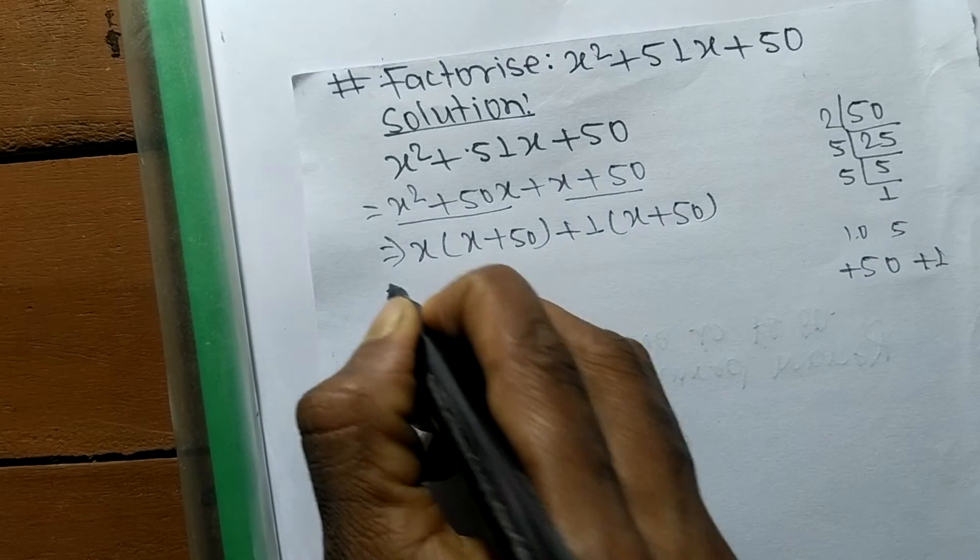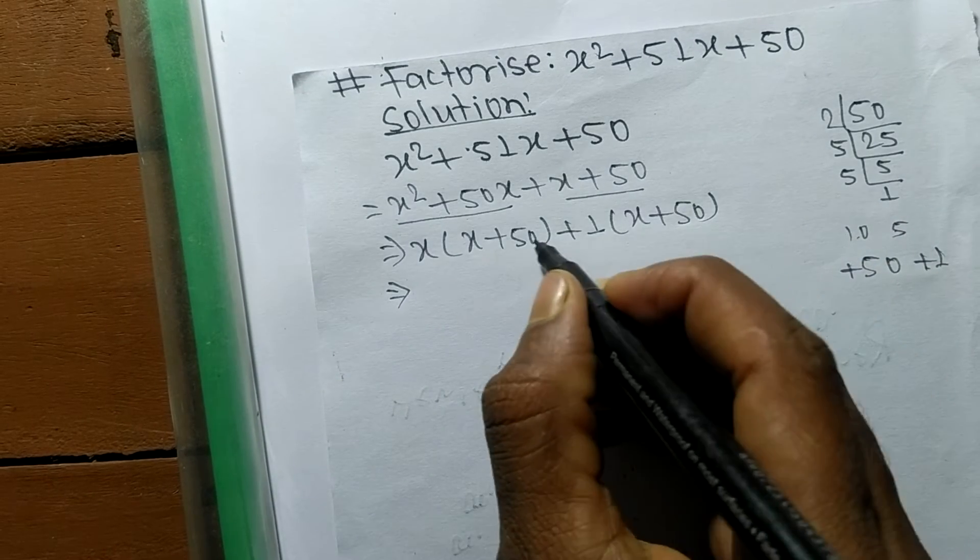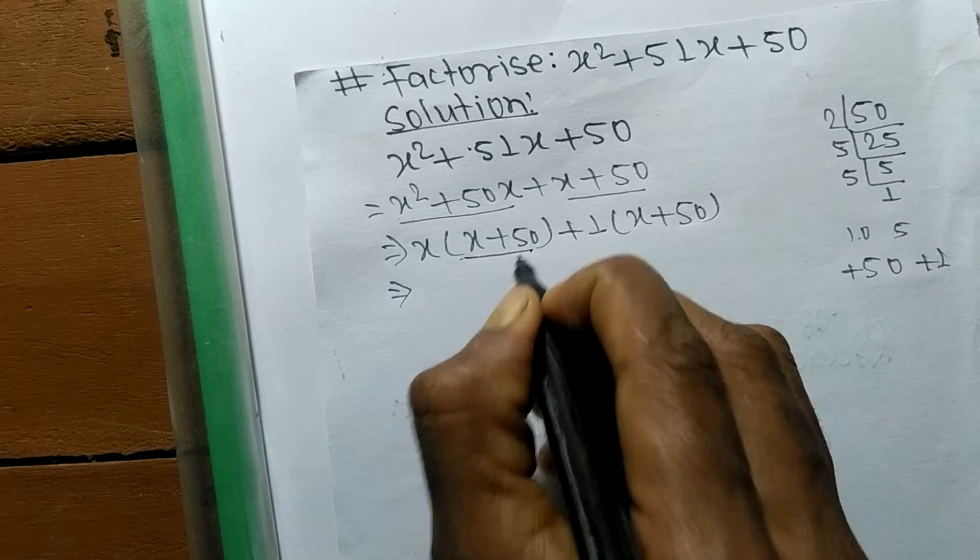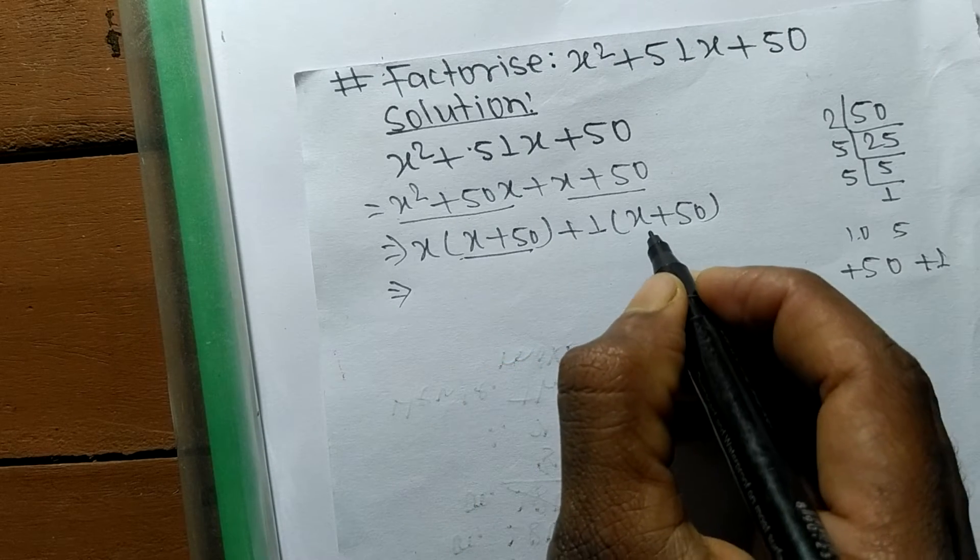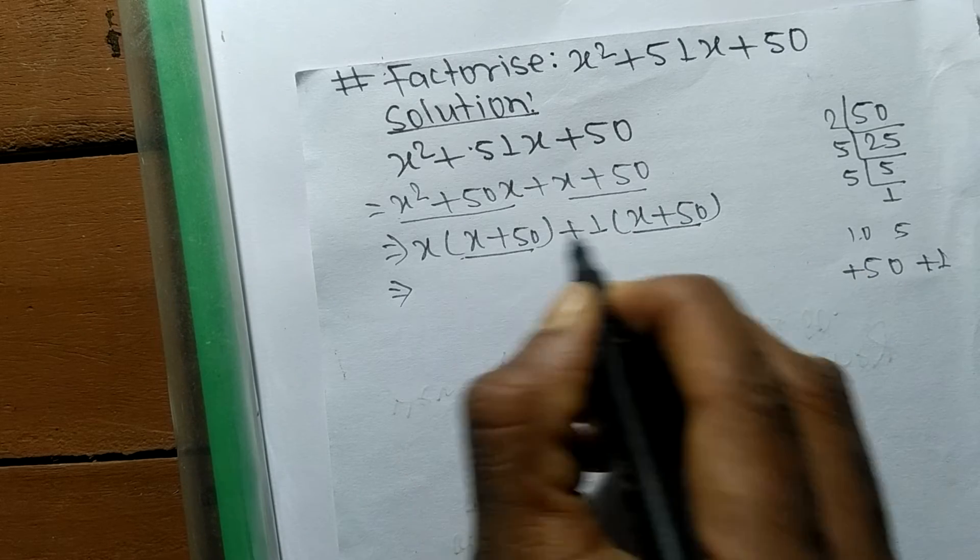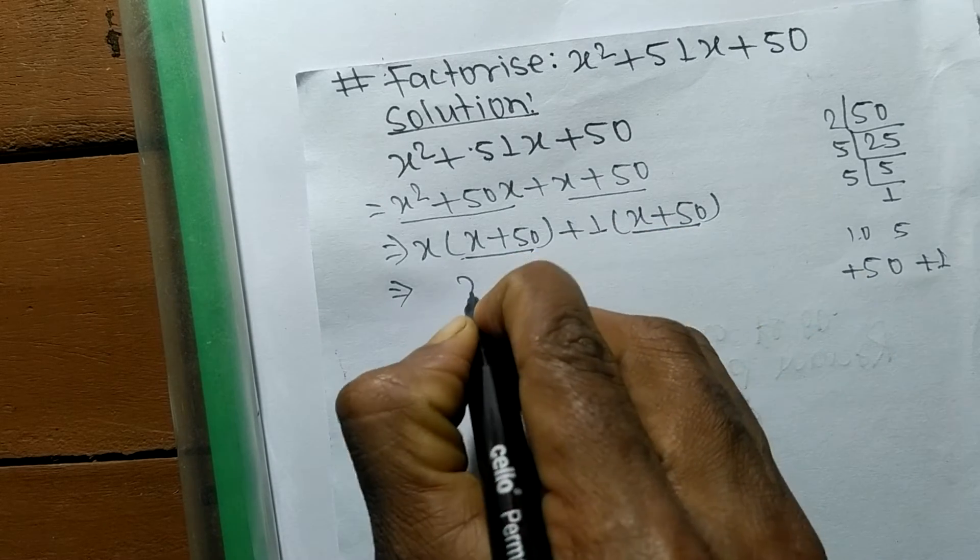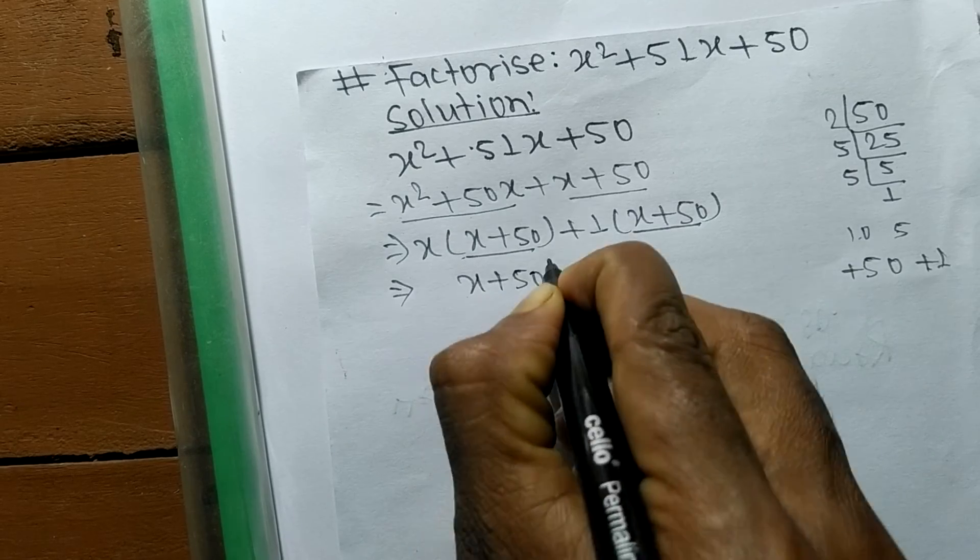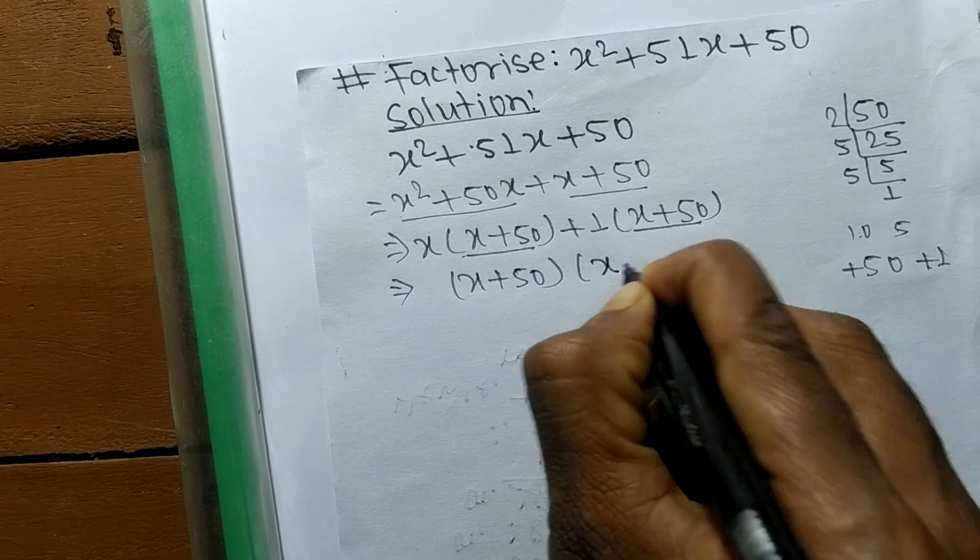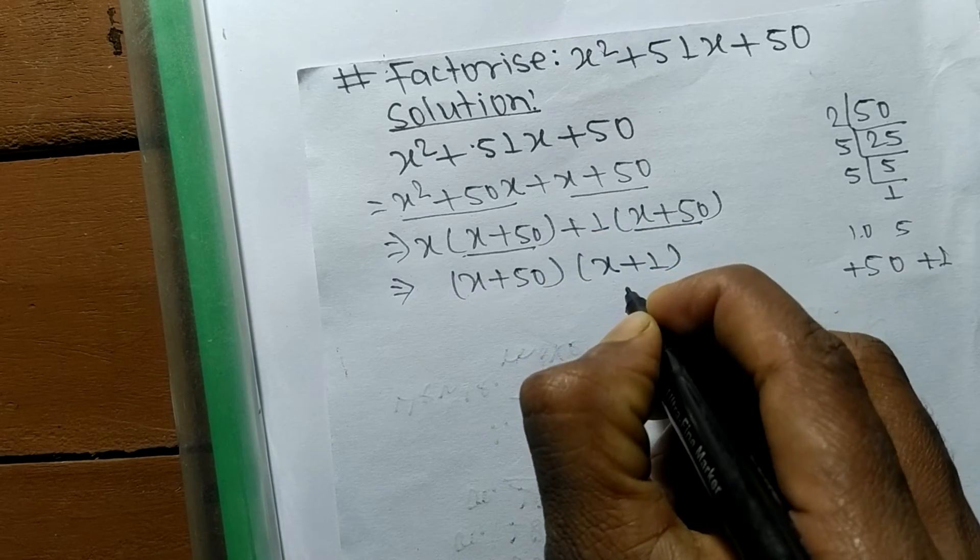Now we have to find the common factor in these both terms. In the first term there is x + 50, and in the second term there is also x + 50. So the common factor is x + 50, and the remaining factors are x and 1.